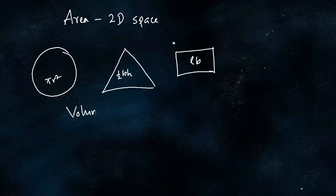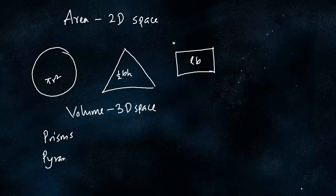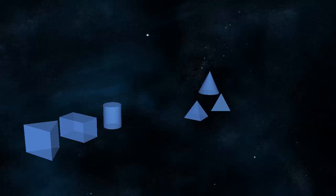Volumes are 3D space — the space occupied by 3D objects. There are primarily two types of 3D shapes: prisms and pyramids. Prisms are shapes that have an area of cross section and a height above the ground, which makes them 3D.